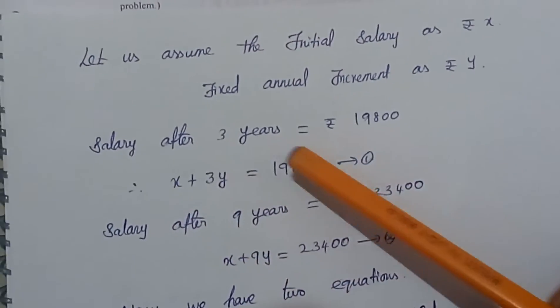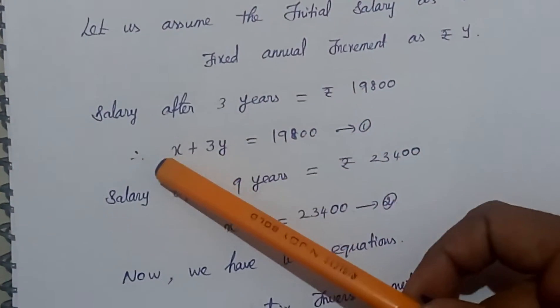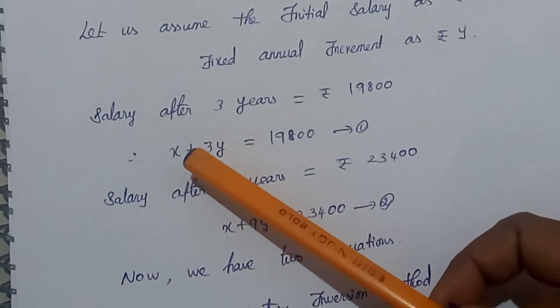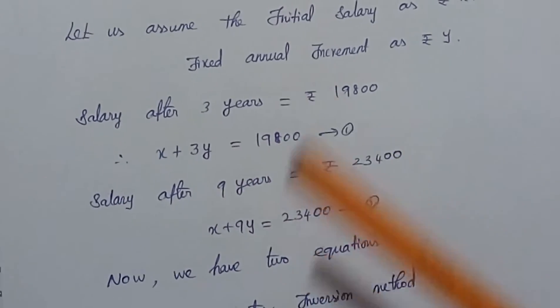Salary after 3 years equals Rs. 19,800. Therefore, we can find the equation: X plus 3Y equals Rs. 19,800.